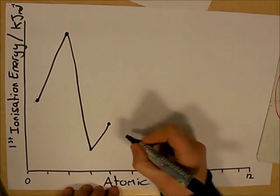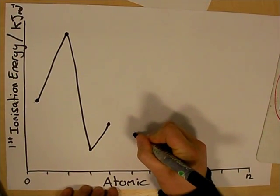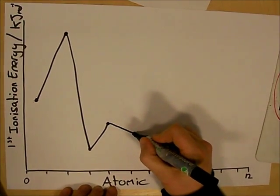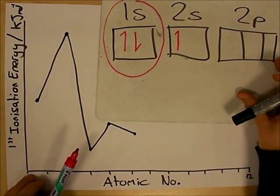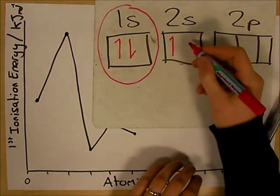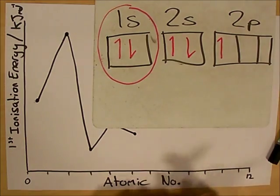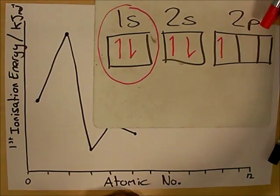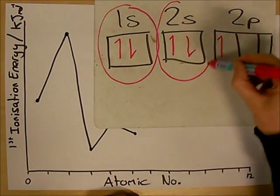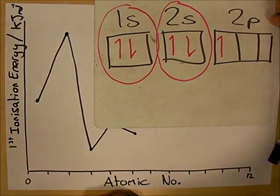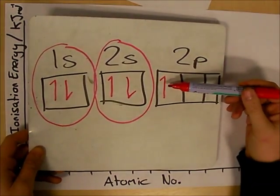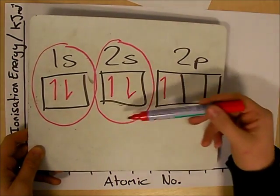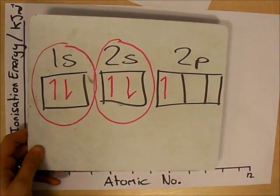The fifth element, atomic number 5, actually decreases in energy. This is due to the fact that the electron is now going into a 2p orbital for the first time, which is higher in energy and therefore further away from the nucleus, making it easier to remove. We also get shielding from the two 2s electrons. So there are two reasons for this decrease: for the first time we have an electron in the 2p which is shielded by the 2s and further away from the nucleus.